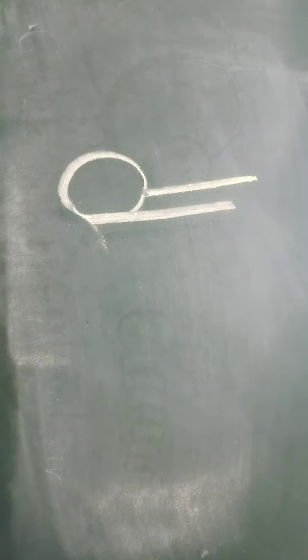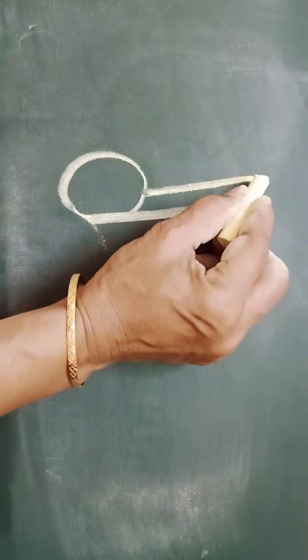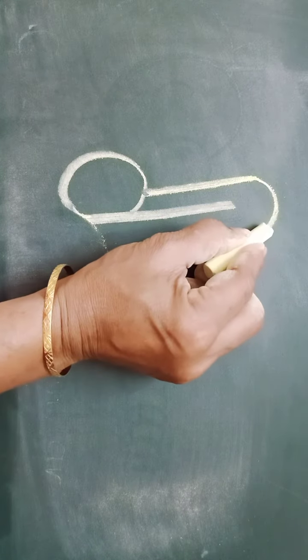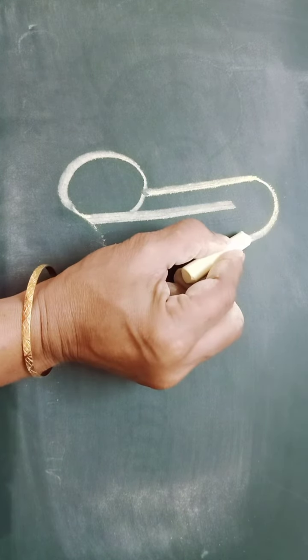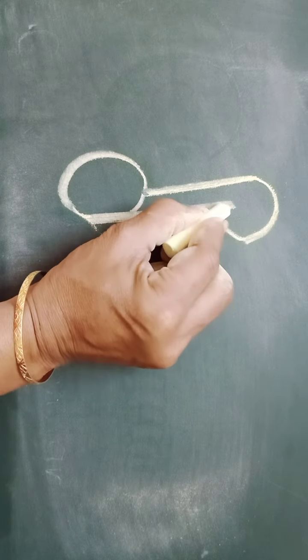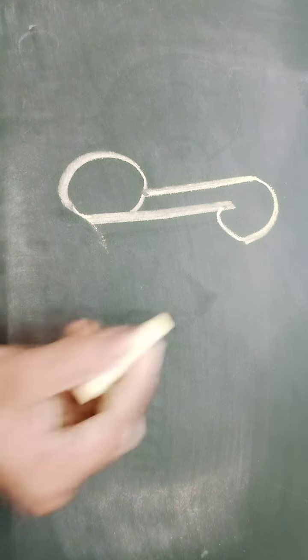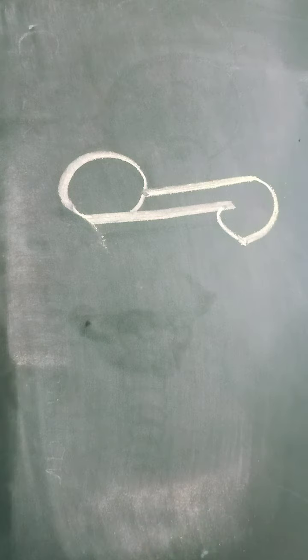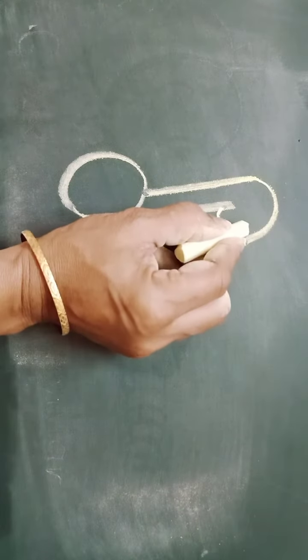Now what am I going to do? I am going to draw a semicircle, you can see, like this, a little pointed at this point because that is going to be the mouth. And now, for the mouth, we will draw one horizontal curved line.